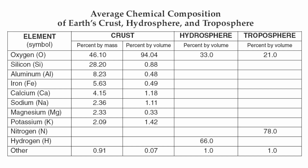Let's give you a couple examples. We want to know what percentage of magnesium is found in the crust by volume — it's going to be about 0.33%. We want to know what percentage of oxygen is found in the crust by mass: 46.10%, or by volume: 94.04%. You'll notice oxygen in relation to the crust is going to be the most abundant element.